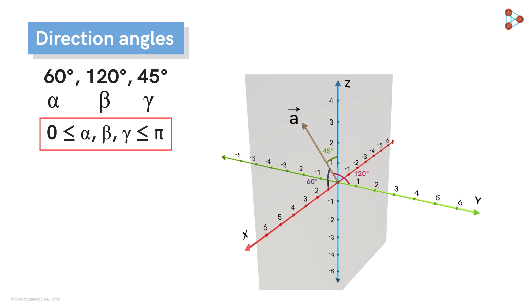So to put it in plain words, the direction angles are the angles that a vector makes with the positive x, y, and z-axis.